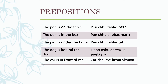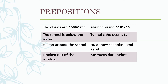The pen is under the table: pencho tablas tal. Under means 'tal' in Kashmiri. The dog is behind the door: hoon cho darwazas petkin. Petkin means behind, darwaz is door, and hoon is dog. The car is in front of me: kaarch mebrot ken. Brot ken means in front of, and kar is car.